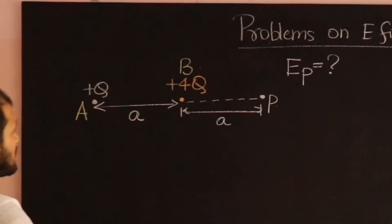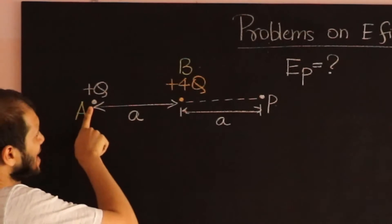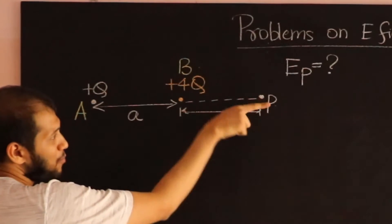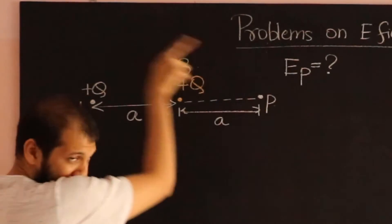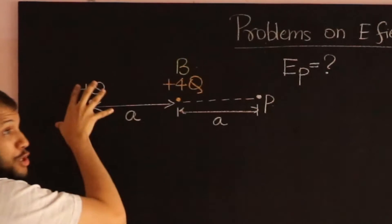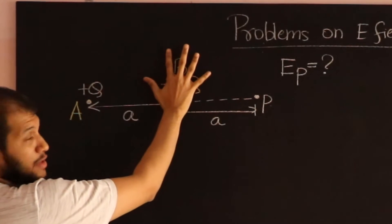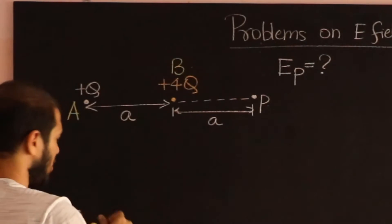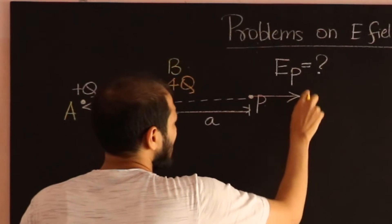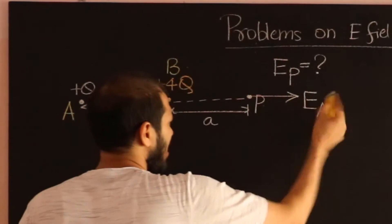So if you consider charge Q, it's going to produce an electric field at point P in this direction. Due to Q alone, when you're calculating, forget about charge B. Let me call that electric field E_A.